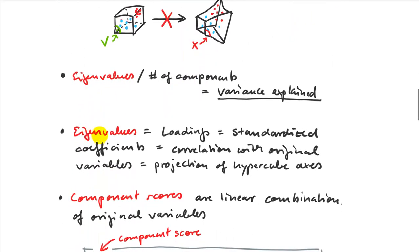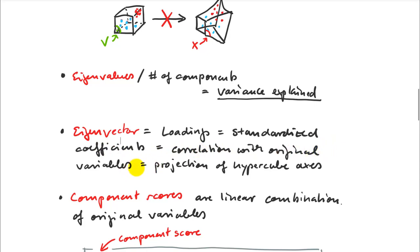Eigenvalues and eigenvectors apply to all these techniques. Eigenvalues divided by the number of components equals the variance explained by each component. Eigenvectors are the loadings — also called standardized coefficients — and represent correlations of your components or discriminant functions with the original variables. You can think of them as a projection of the multivariate hypercube onto a two-dimensional plane.